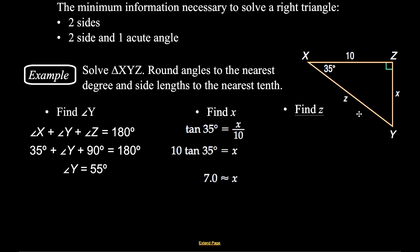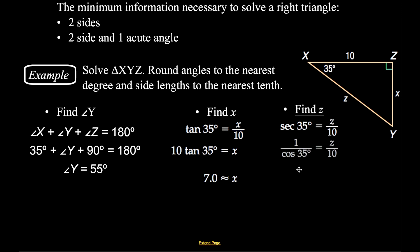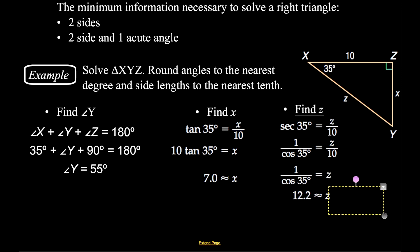To find side z, we have two options: we could use the Pythagorean Theorem with 10 squared plus 7 squared, or we could use another trig function. Usually you don't want to use a value you just solved for, in case of errors. So what trig function uses the adjacent side and the hypotenuse? That's the cosine or secant. To keep z in the numerator, I'll choose secant, redefining it as 1 over cosine. Multiplying both sides by 10, z equals 10 divided by the cosine of 35 degrees, which gives about 12.2.